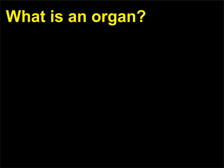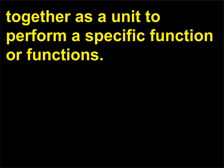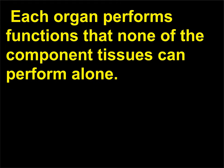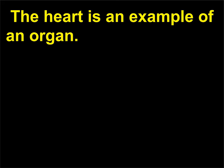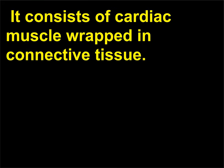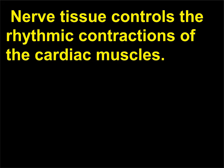What is an organ? An organ is a group of several different tissues working together as a unit to perform a specific function or functions. Each organ performs functions that none of the component tissues can perform alone. This cooperative interaction of different tissues is a basic feature of animals, including humans. The heart is an example of an organ: it consists of cardiac muscle wrapped in connective tissue, the heart chambers are lined with epithelium, and nerve tissue controls the rhythmic contractions of the cardiac muscles.